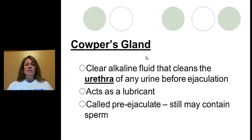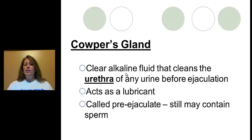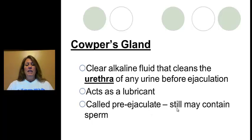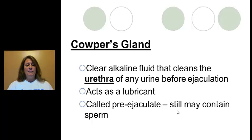Cowper's gland — also called the bulbourethral gland — is not in your reading. It produces a clear, alkaline fluid. Its main job is to clean out the urethra of any urine before ejaculation. It also acts as a lubricant so semen can leave the body easily, and it is known as pre-ejaculate. If a male has previously ejaculated, there can still be residue of that liquid which may still contain sperm, meaning pregnancy is possible.